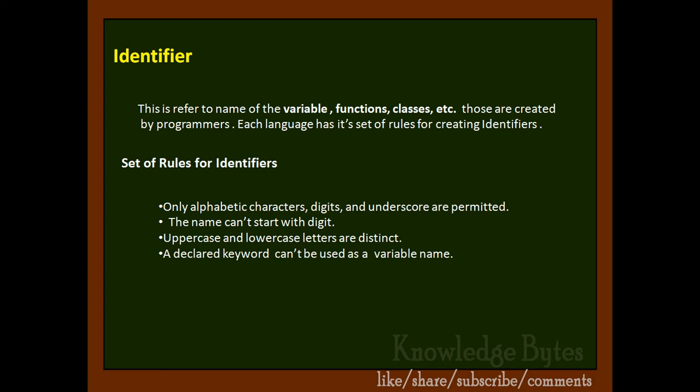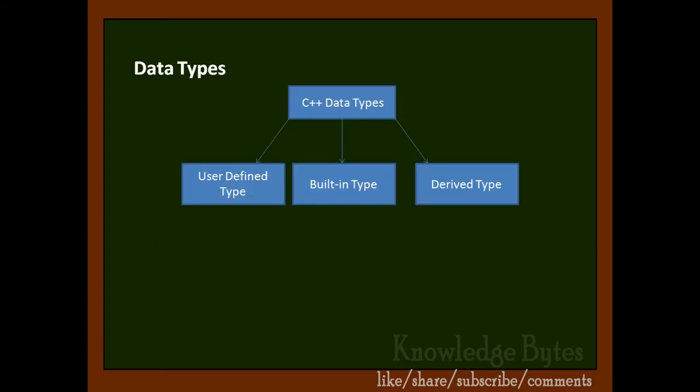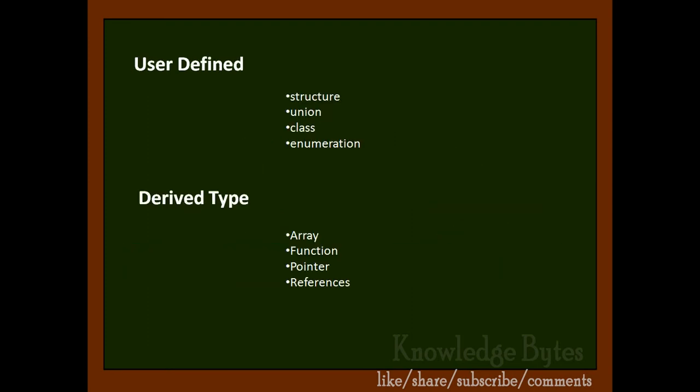Let's discuss what you mean by data types. We use variables, and for storing data, we need variables. How do we classify those data? In C++, we can broadly classify data types into three categories: user-defined type, derived type, and built-in type. Built-in type means predefined by the compiler. User-defined types are defined by the users.